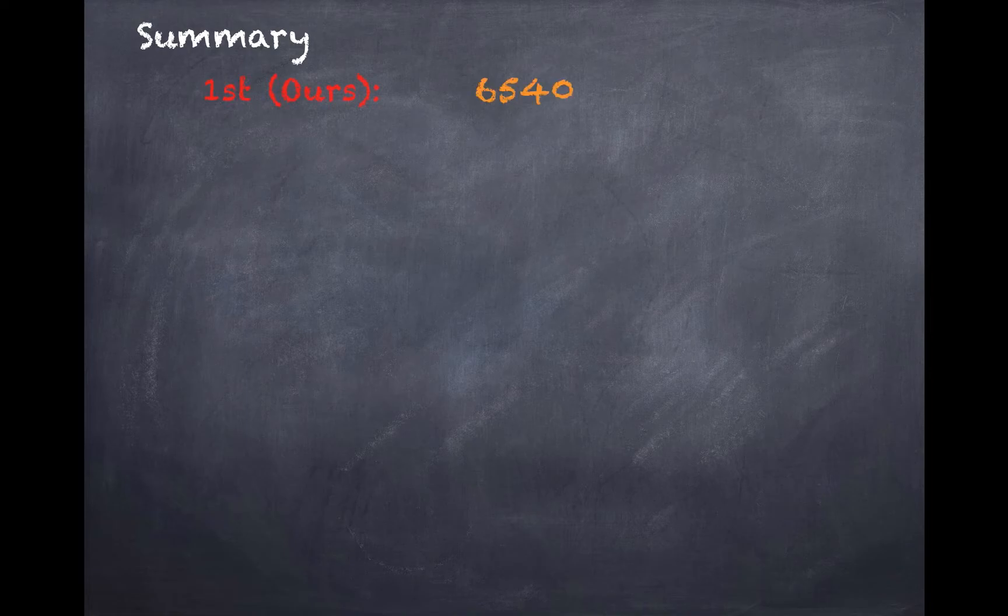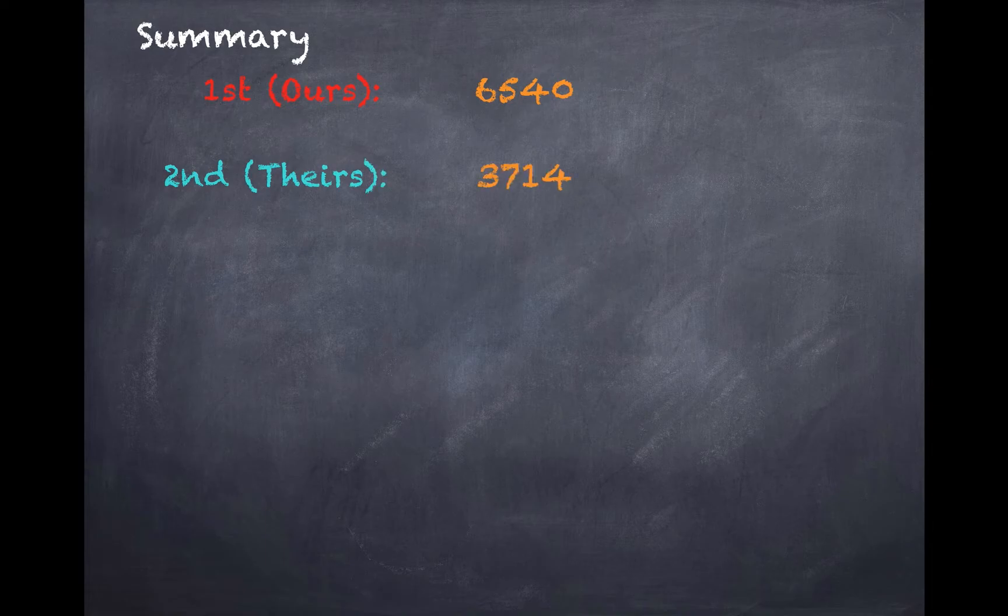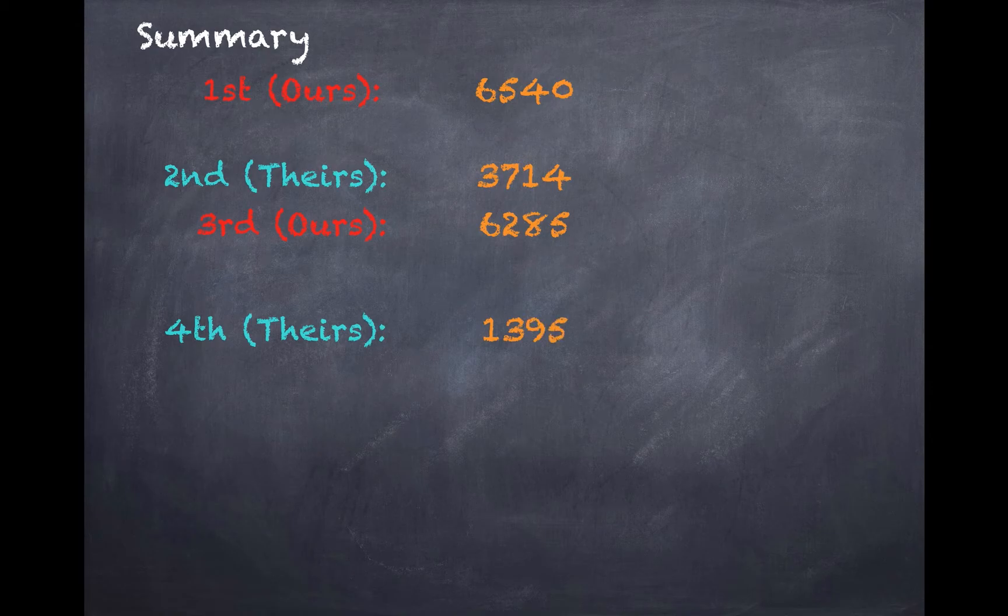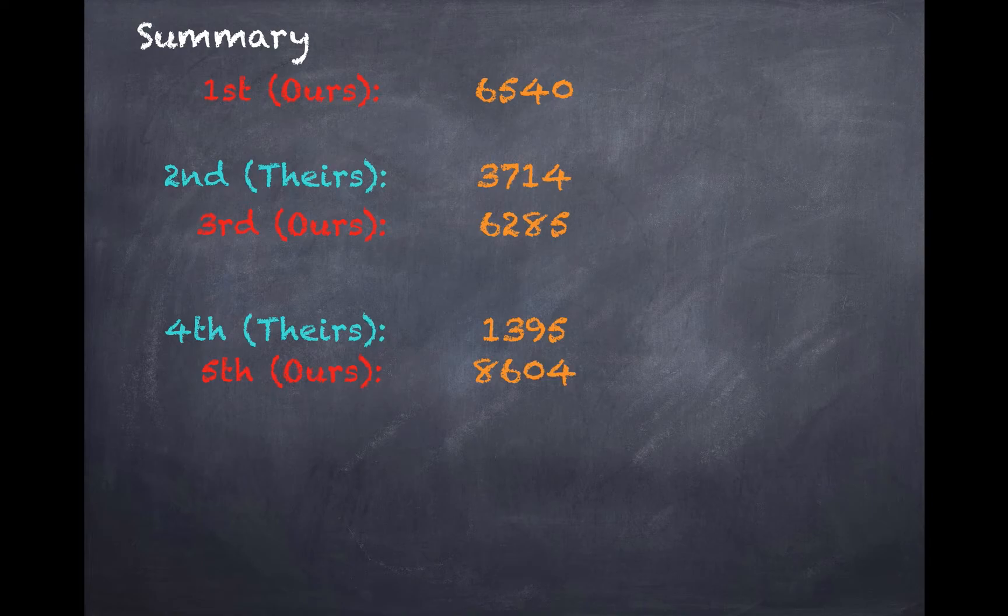So let's do a quick summary of what we have so far. The first number we chose was 6540. Then it was our audience's turn, and they chose 3714. Again, we chose 6285. They chose 1395, and our last choice was 8604.